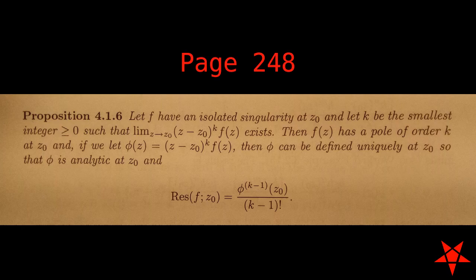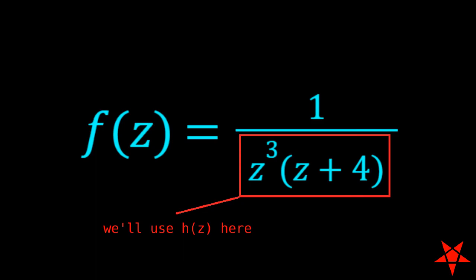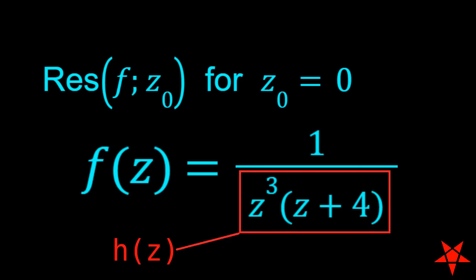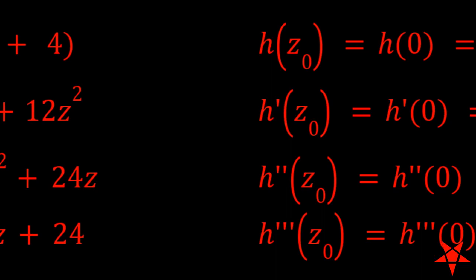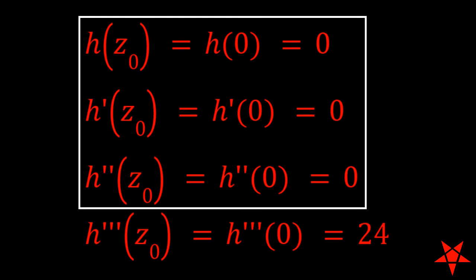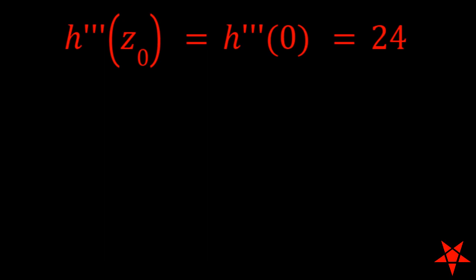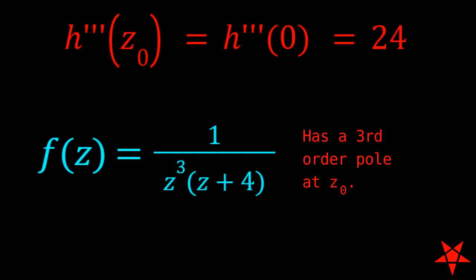Although we're not required to do so, I'd like to pause and examine the behavior for the denominator of f of z. In the case of z naught equals 0, if we refer to the denominator as h of z and crunch the first three derivatives, then we can see that h of z naught and the first two derivatives evaluated at z naught are all 0. The third derivative, however, when evaluated at z naught, is equal to 24, and this shows that we're dealing with a pole of the third order at z naught.